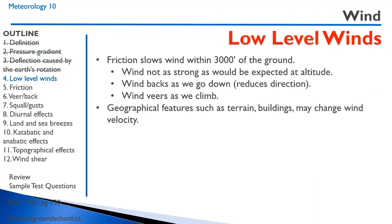At low levels, friction with the ground slows the wind within 3,000 feet of the surface, so the wind is not as strong as it would be at altitude. When we look at upper-level winds, you'll notice that winds at 3,000, 6,000, and 9,000 feet are almost always stronger than at the surface when looking at airport winds.